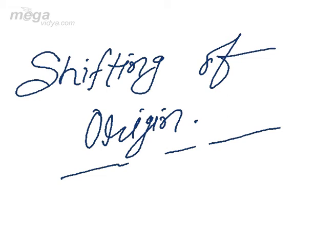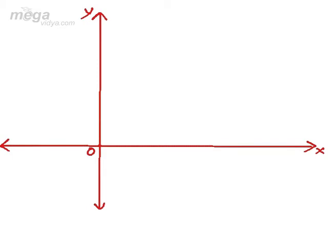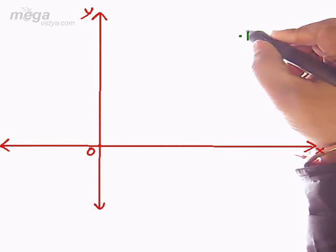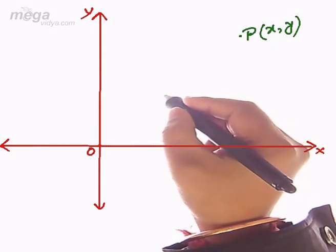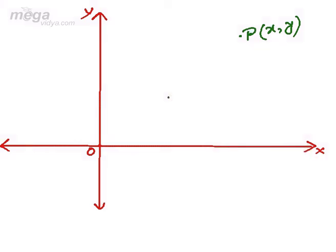Shifting of origin means when the origin is shifted to some other point rather than (0,0), then what will be the effect on the equations of curves and what will be the effect on the coordinates of the point. This is the origin; with respect to this origin, the coordinate of any point — suppose this is P — is X comma Y. Now this origin is shifted to a point, suppose H comma K.